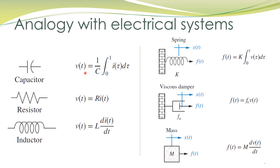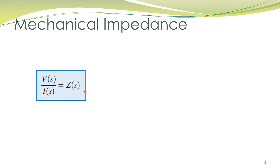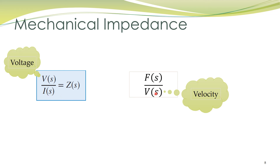Force in mechanical systems is analogous to voltage in electrical circuits, and velocity in mechanical systems is analogous to current in electrical circuits. In electrical circuits, impedance is defined as the ratio of voltage to current. Similarly, mechanical impedance can be defined as force divided by velocity, because force is analogous to voltage and velocity is analogous to current. Note that here v stands for velocity, not voltage — do not confuse the two.